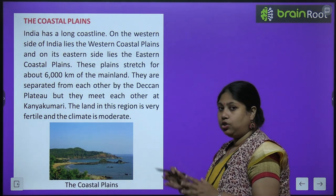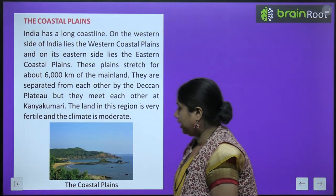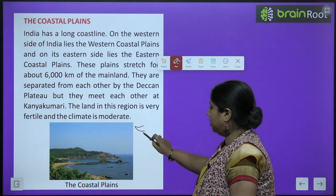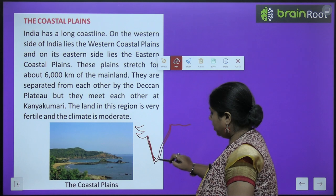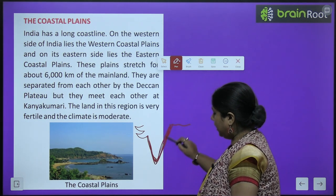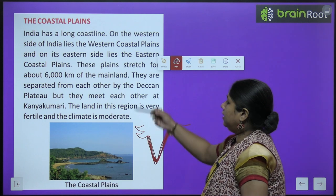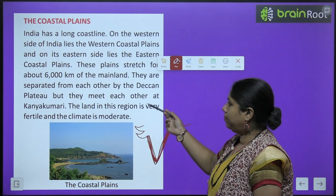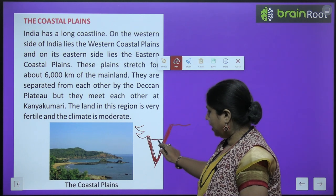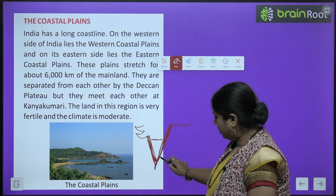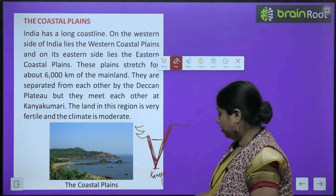The coastal plains: Peninsular India yaani India teen taraf se paani se ghira hua hai. Yeh jo areas paani ke paas hain woh hote hain coastal plains — kyunki yeh sea ke paas hain isliye coastal plains kehlaate hain. These plains stretch about 6000 km of the mainland. They are separated from each other by the Deccan Plateau, but they meet each other at Kanyakumari — yahan pe dono coastal plains ek doosre se milte hain.